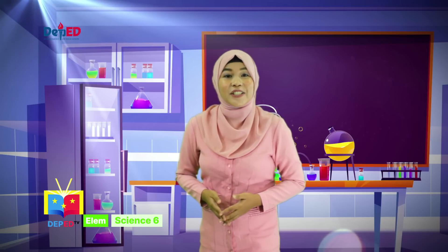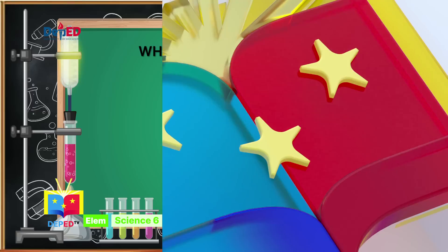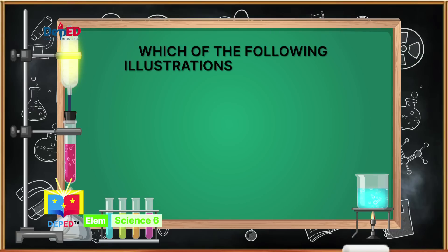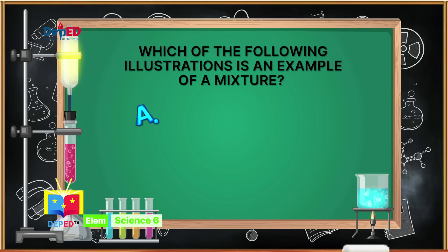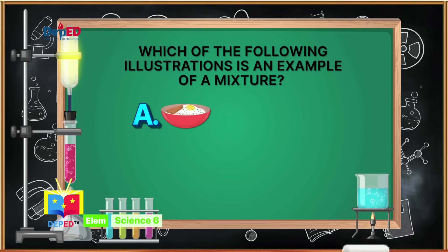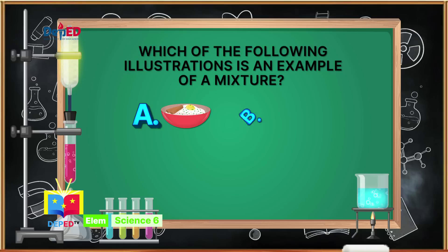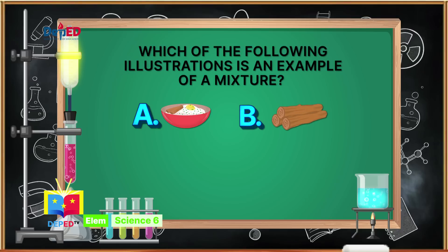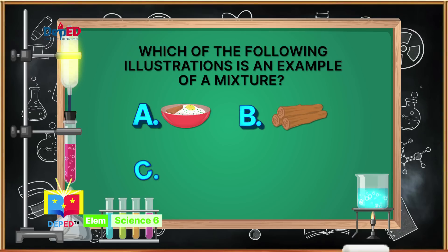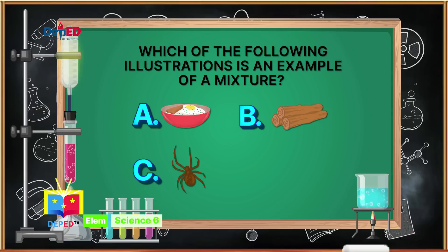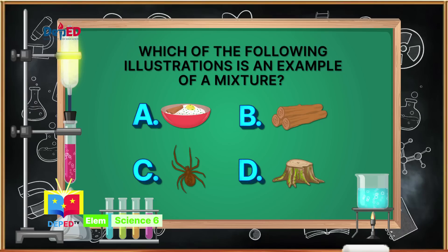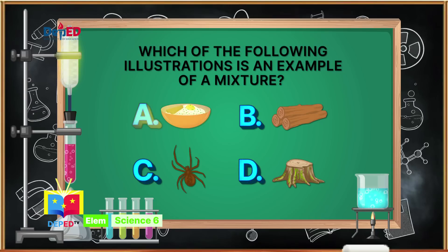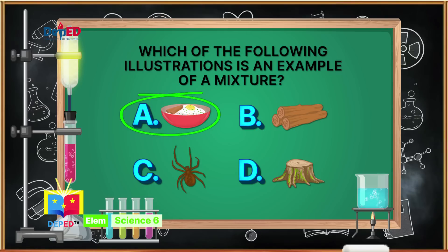Choose the letter of the correct answer and write your answers on your paper. Number 1: Which of the following illustrations is an example of a mixture? The correct answer is A — a bowl of food.